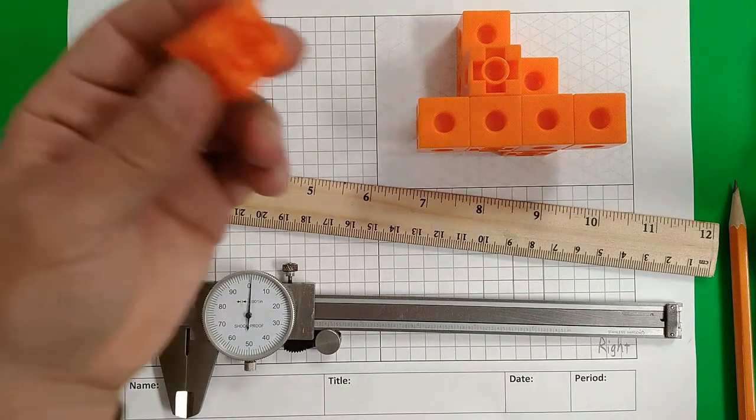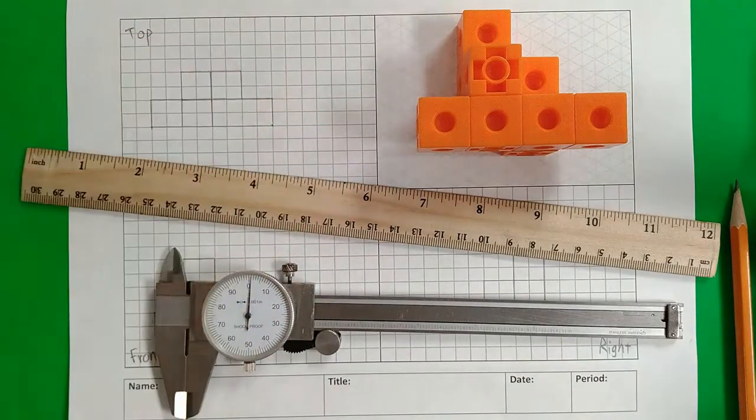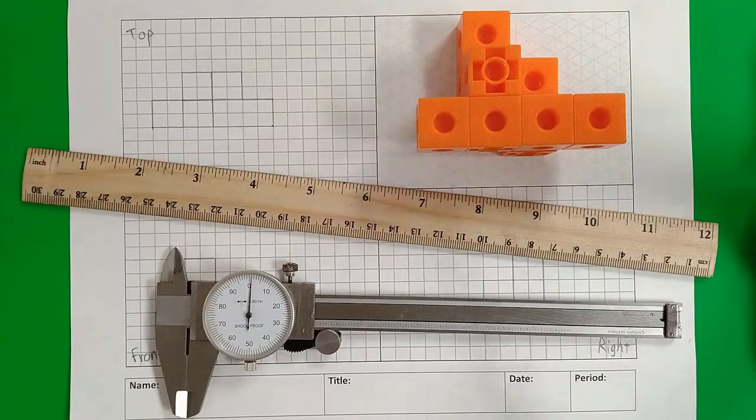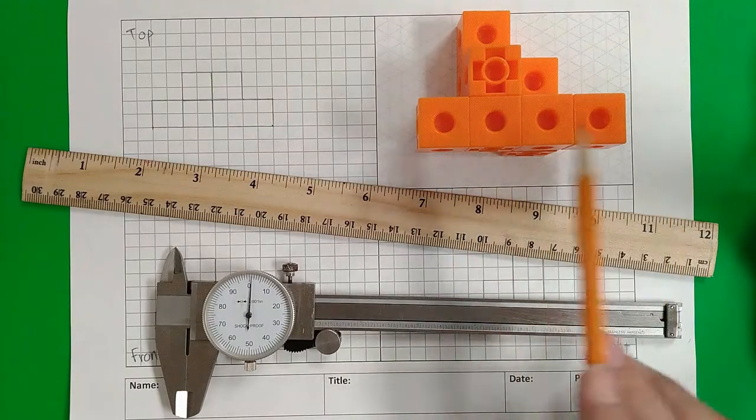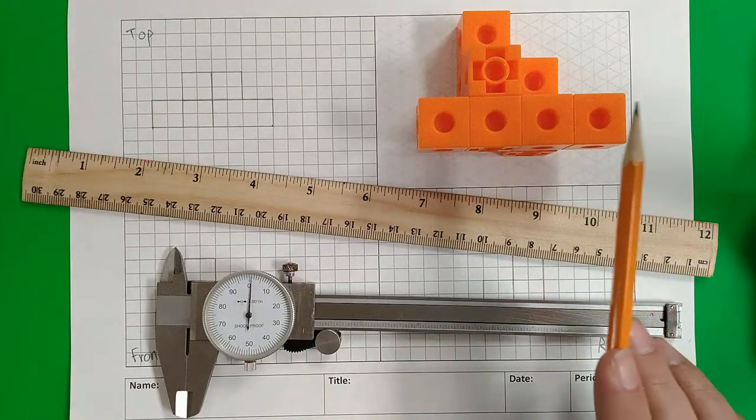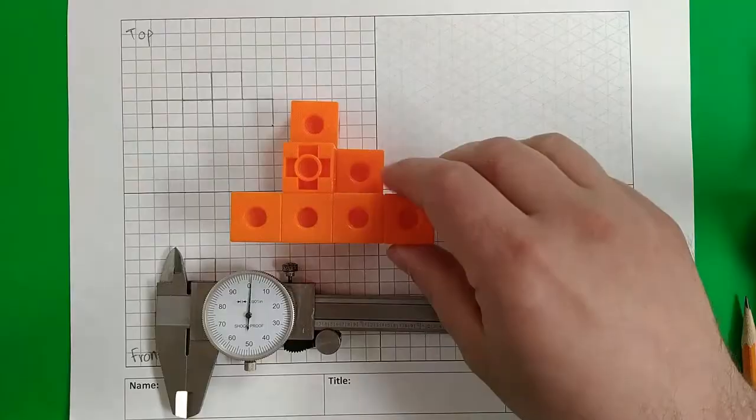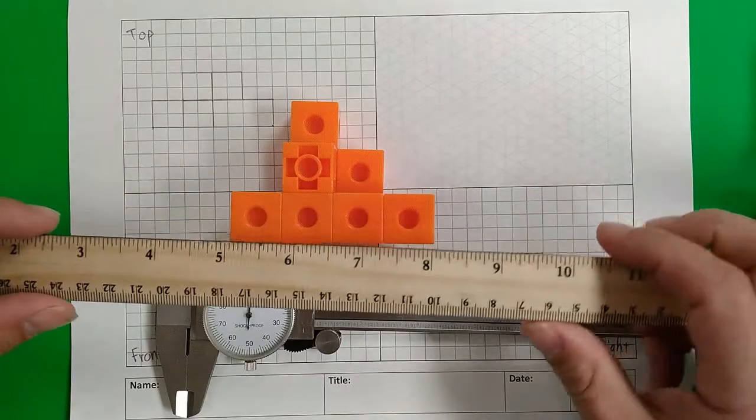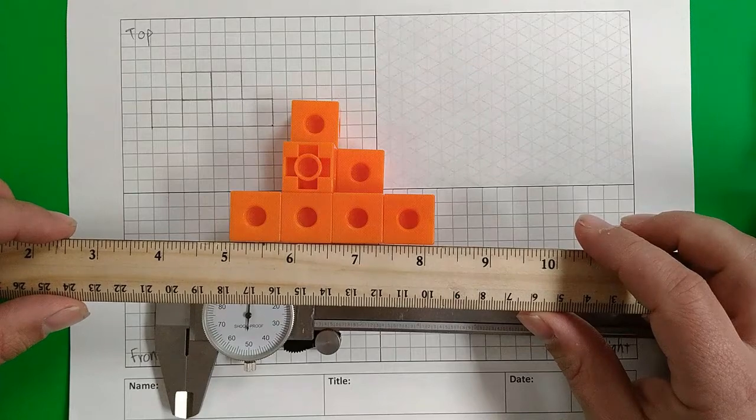Well I'm using three quarter inch linking blocks to make this which means three quarter, one and a half, two and a quarter, three. This should be exactly three inches across but when I take the actual measurement we notice that it's actually more than three inches across.